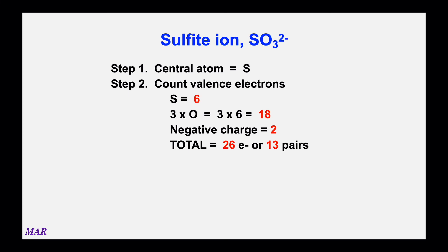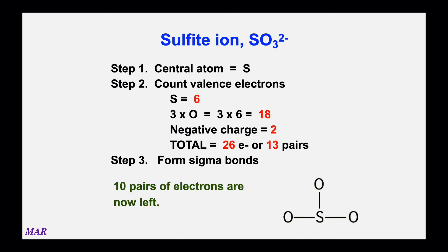Sulfite has a negative two charge, meaning two extra electrons are added to the valence electrons. So we have six plus eighteen plus two equals twenty-six valence electrons, or thirteen pairs. The ionic charge is added in: negative ions add electrons, positive ions subtract them. For example, NH4 plus would require subtracting one electron. It's counterintuitive, but just remember — negative ions add electrons. Next, put sigma bonds connecting each oxygen to sulfur; that uses three of our thirteen pairs, leaving ten.